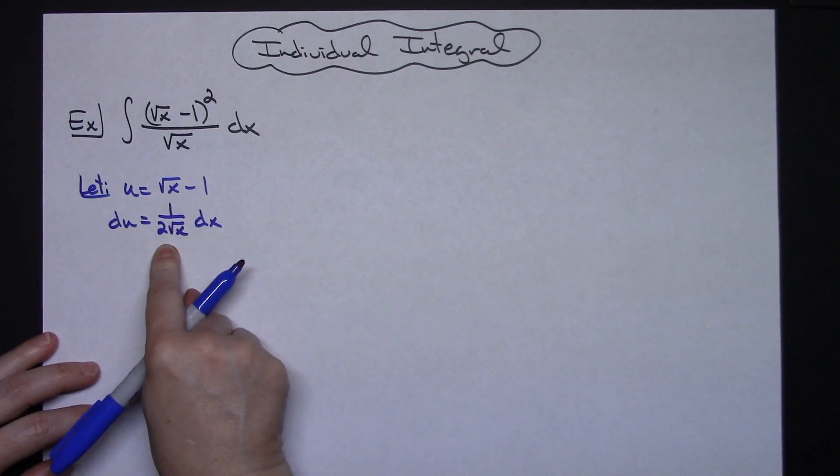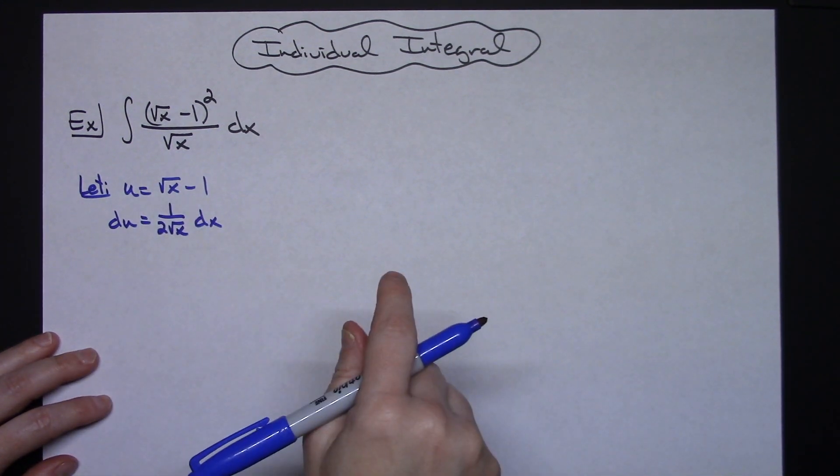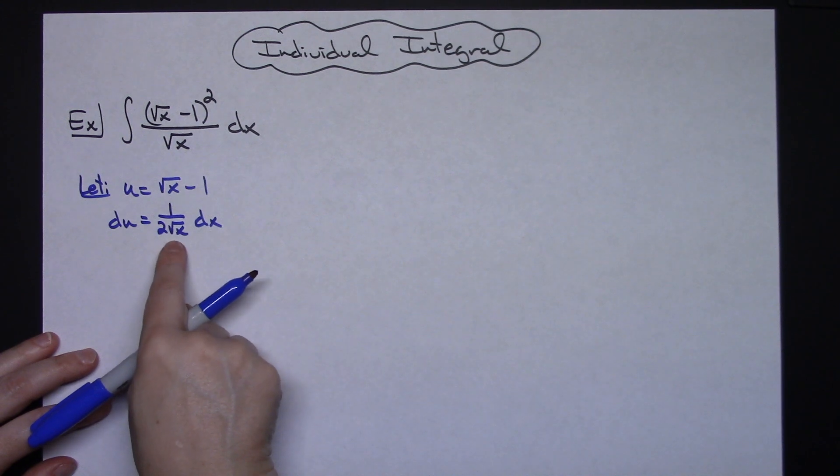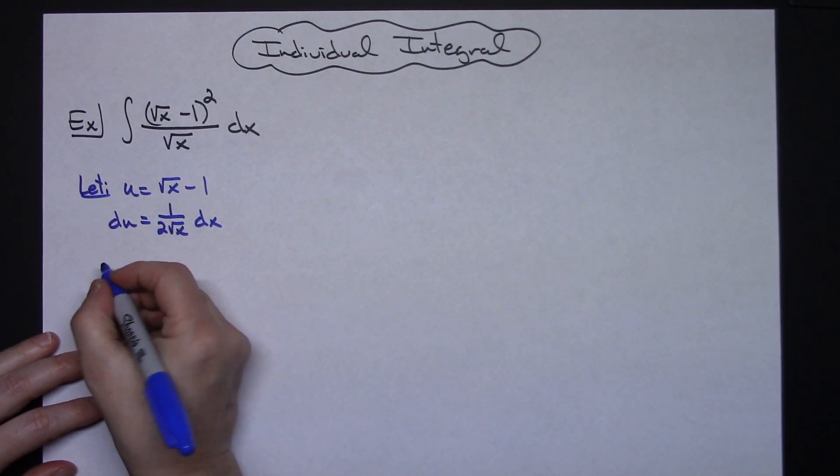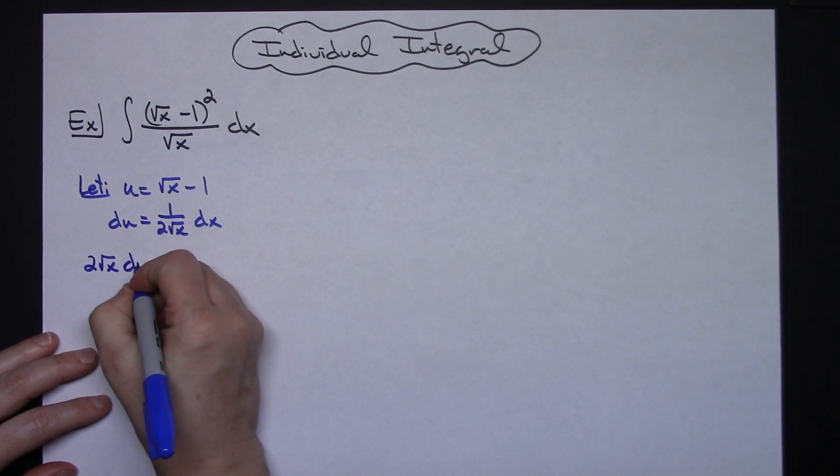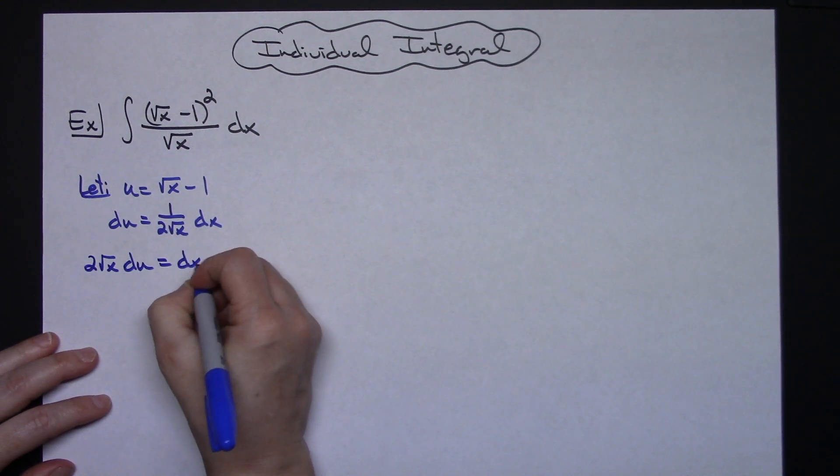If you cannot do that derivative that quickly in your head you probably need to pause the video and try it just to make sure that you can get that derivative right there. I'm going to go ahead and solve for dx. So I'm going to multiply both sides by that 2 square root of x. So 2 square root of x du is going to be equal to our dx.